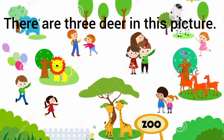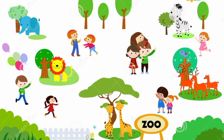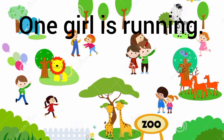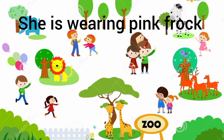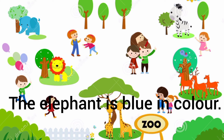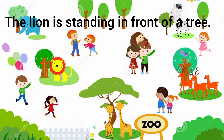There are three deer in this picture. Children, the plural of deer is deer only, so we say 'deer' — not 'deers.' Our next sentence is: 'A boy is holding many balloons.' One girl is running, and she is wearing a pink frock. The children are enjoying in the picture. The elephant is blue in color, and the lion is standing in front of a tree.